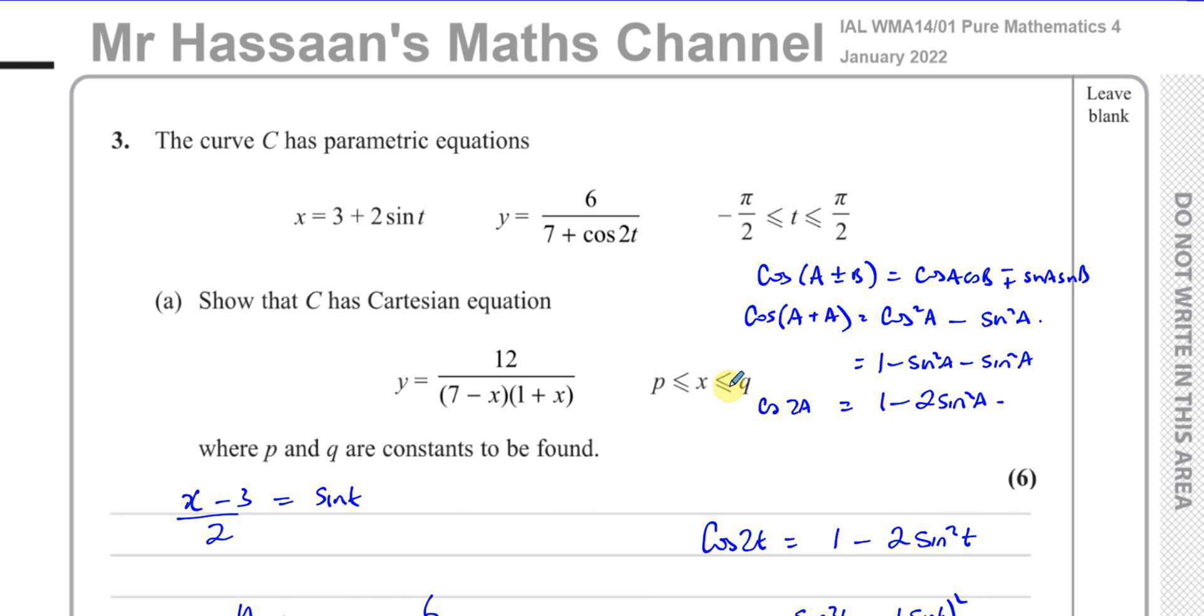So basically, it's telling us when T is equal to minus pi over 2, you've got to find what X is. Now, when X is equal to 3 plus 2 times sine of minus pi over 2, which is 3, the sine of negative pi over 2 is going to be minus 1. So that's 2 times minus 1, which is minus 2. 3 minus 2, which is 1. So we know that P is equal to 1.